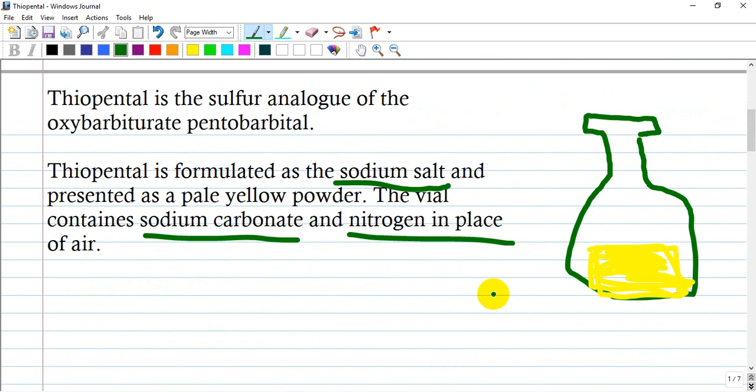Thiopental is a sulfur analogue of the oxybarbiturate pentobarbital. It is formulated as the sodium salt and presented as a pale yellow powder in a vial. The vial contains sodium carbonate and nitrogen in place of air.